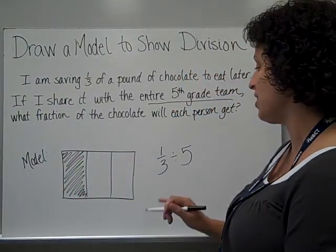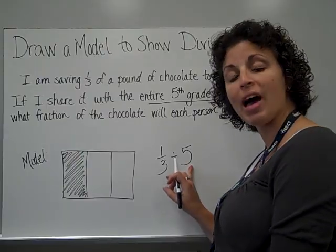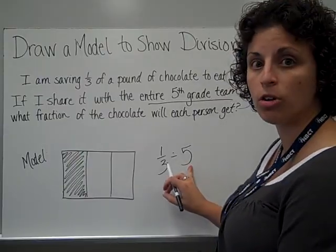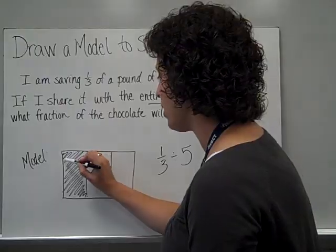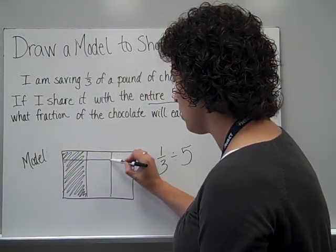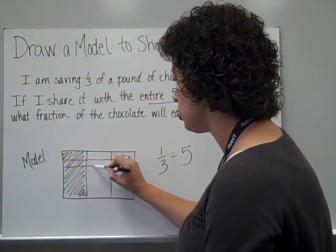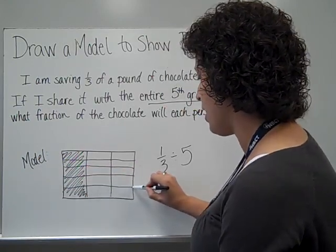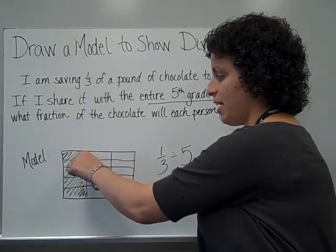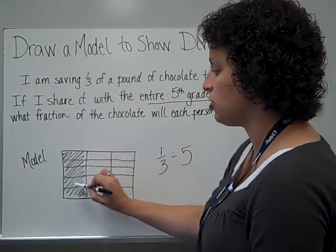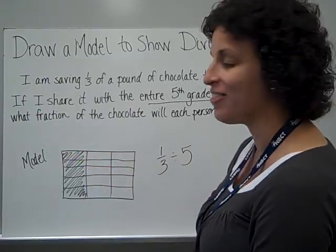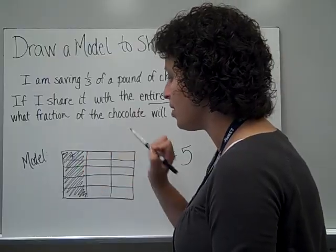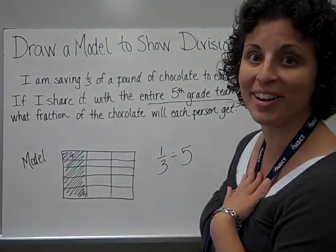So there's my 1 third of a pound and I'm going to now have to cut it into 5 rows going across since I'm going to share it with 5 people. 1, 2, 3, 4, 5. So there's my 5 rows. I could have this piece and the other teachers could each pick one piece for themselves. So this is my piece.